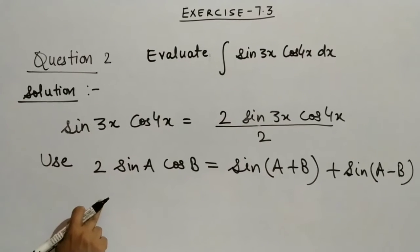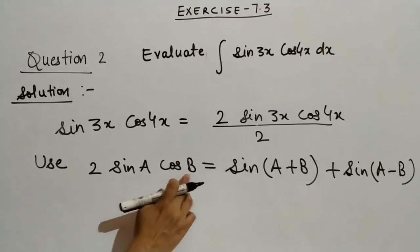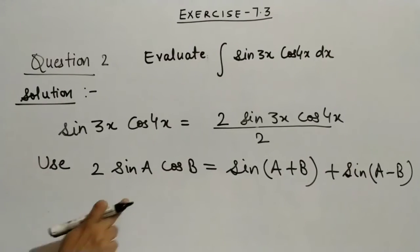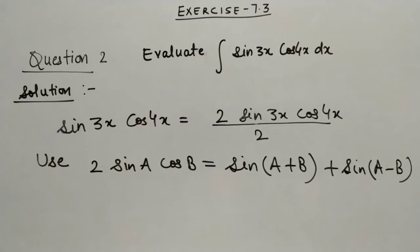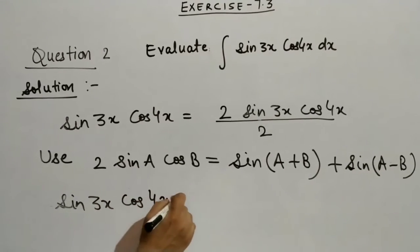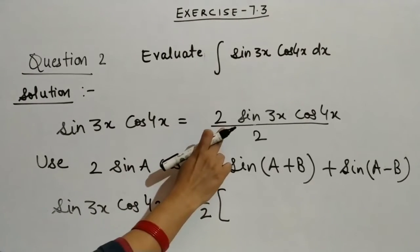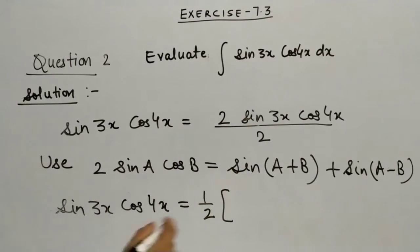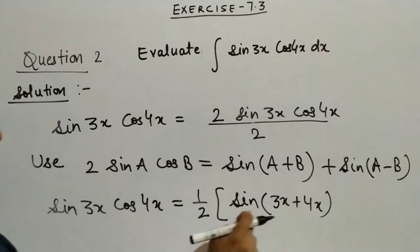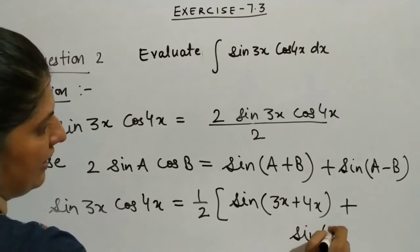Now we will use the formula for 2 sin A into cos B. We know that 2 sin A into cos B is equal to sin(A + B) plus sin(A − B). Applying this formula in the numerator: 2 sin 3x cos 4x equals sin(3x + 4x) plus sin(3x − 4x).